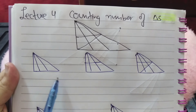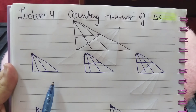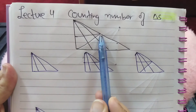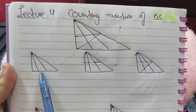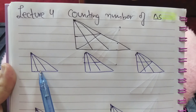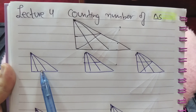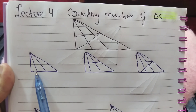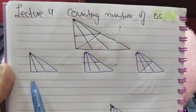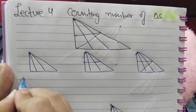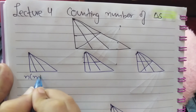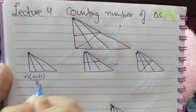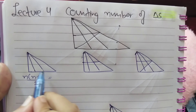As I discussed in the previous lecture 2 of this series, firstly neglect these two lines and consider this simple diagram. As discussed in lecture 2 of the series on counting number of triangles, if a line starts from one vertex and cuts at the base, for such cases the formula to find the number of triangles is n into n plus 1, whole divided by 2.